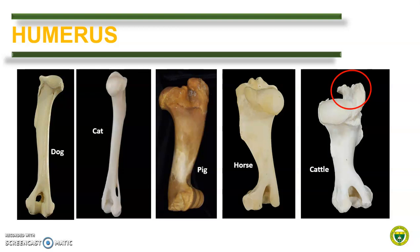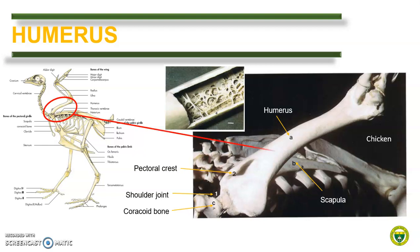In cattle, there is a massive greater tuberosity overhanging the bicipital groove. The greater tubercle is divided into a cranial and a caudal part in all animals except cats. In birds, the humerus is thin and the medullary cavity contains a network of trabeculae which increases the strength of the bone. Many long bones of birds like the humerus are pneumatized. The humerus has a pectoral crest for attachment of the pectoral muscle.